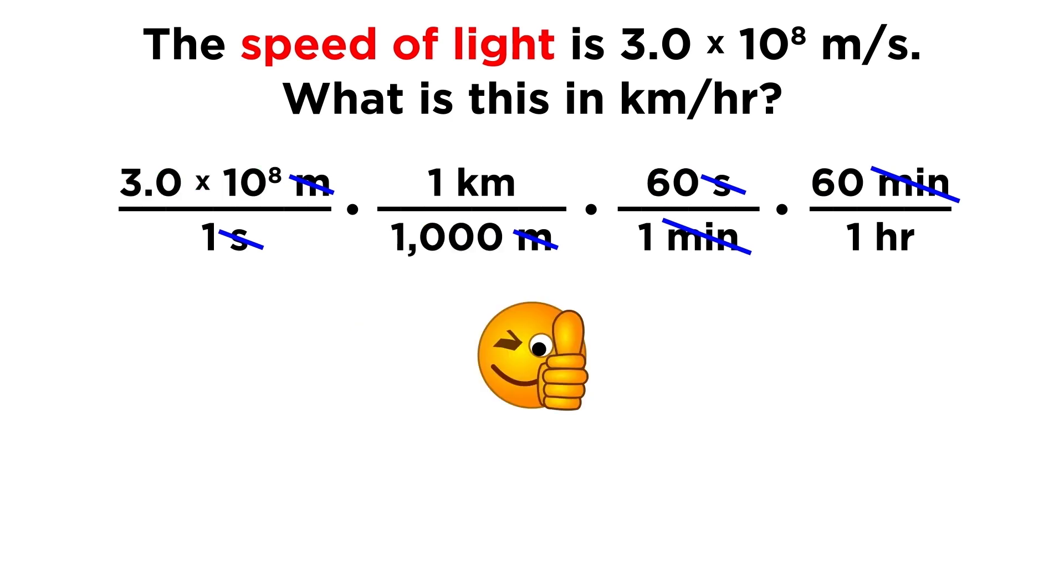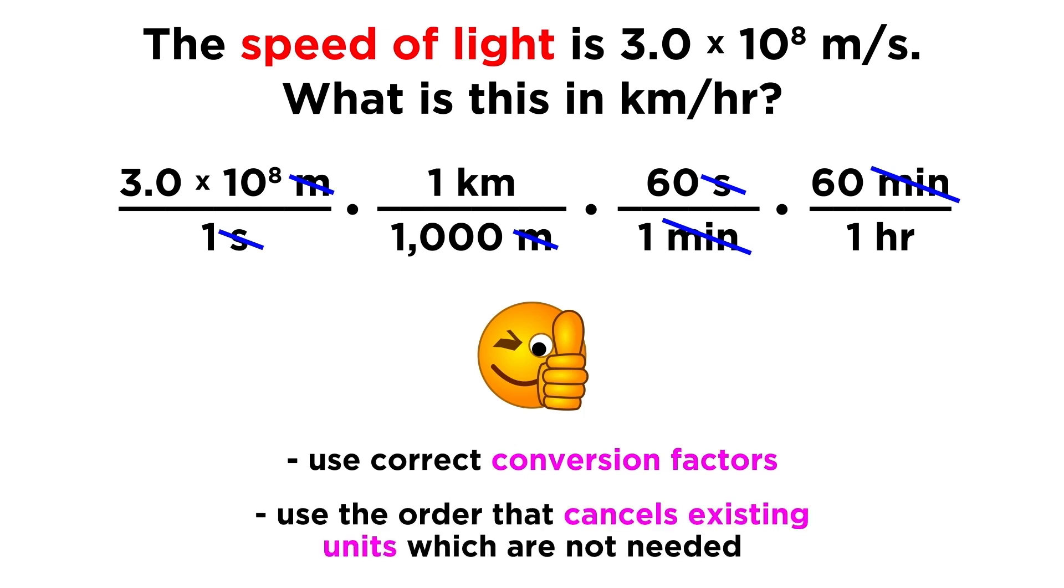So we can see that this process will be quite straightforward for any conversion we wish to perform. We just have to know the conversion factor, or the two things that go on the top and bottom of these fractions, and then just make sure that we place them in the correct order, so as to cancel out the units the way we want.